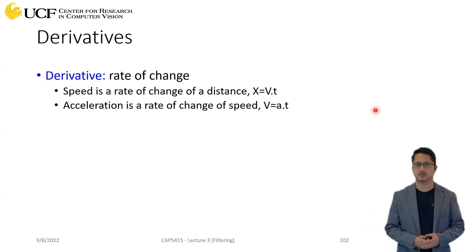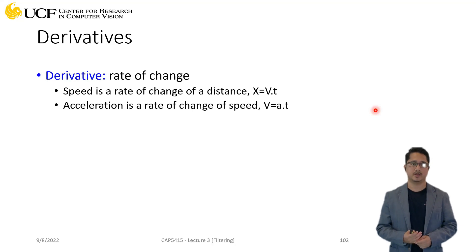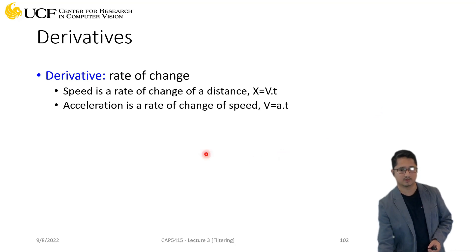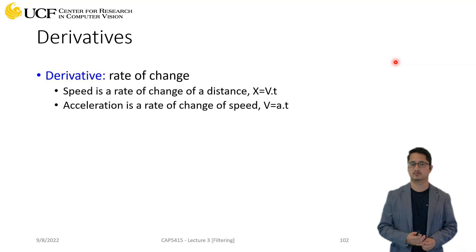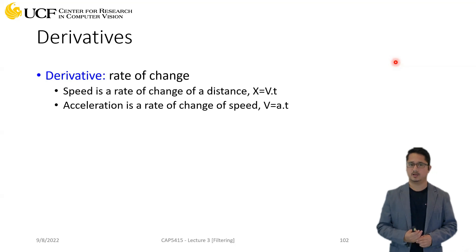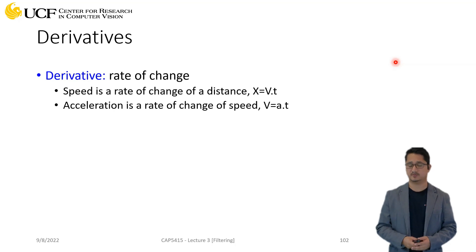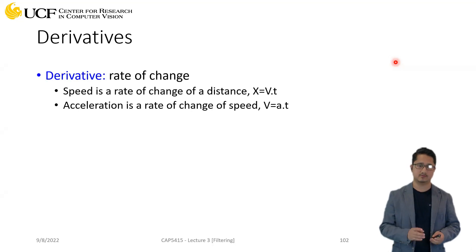Derivative comes from high school maths. The derivative gives you a rate of change, and it can have various meanings depending on the context. A simple interpretation is that if you compute a derivative on a function, it gives you the slope at any point. In day-to-day life, if you're driving a car and compute the derivative with respect to time, you get speed; compute derivative of speed with respect to time and you get acceleration.